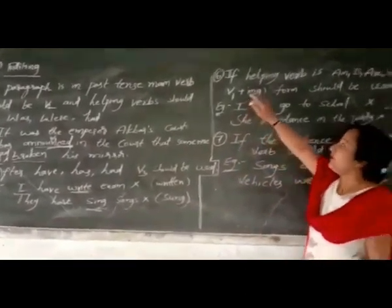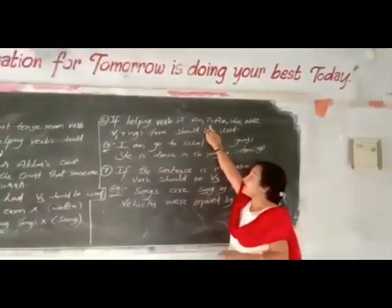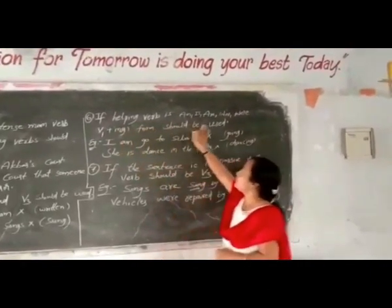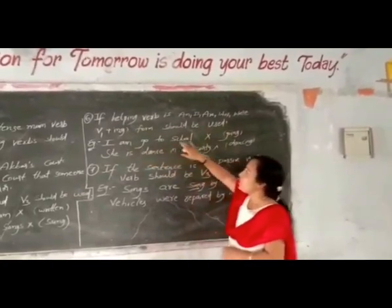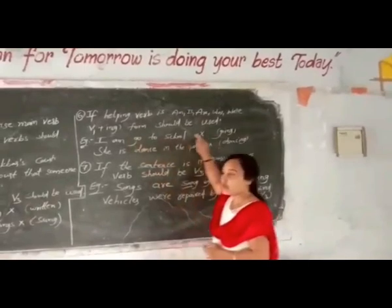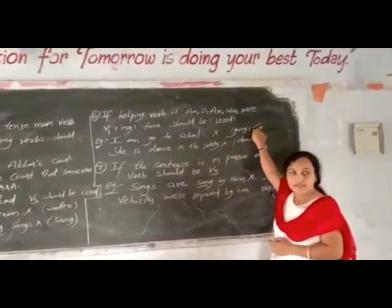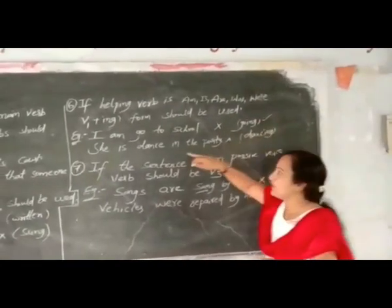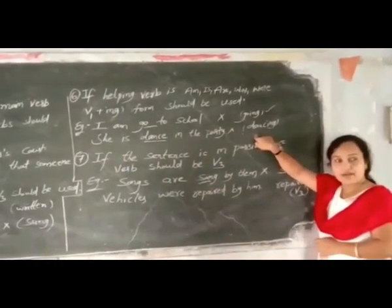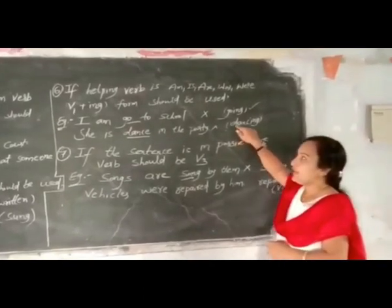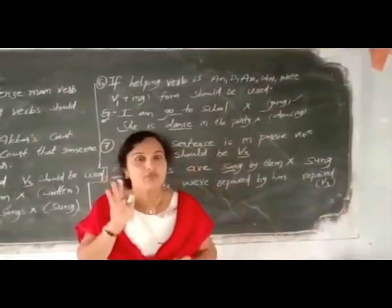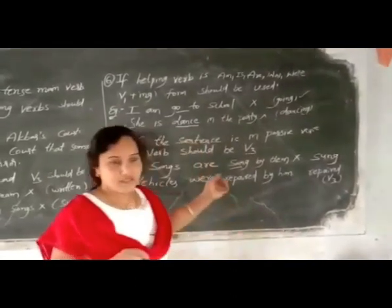Sixth rule: if the helping verb is am, is, are, was, or were, then the verb plus '-ing' form should be used — that is, the continuous form. For example: 'I am go to school' — 'go' is the error; it should be 'going.' Correct: 'I am going to school.' Another: 'She is dancing in the party' — 'is dancing' is correct. After am, is, are, was, were — always use verb plus '-ing' form.